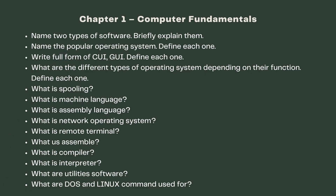Chapter One: Computer Fundamentals. Name two types of software and briefly explain them. Name the popular operating systems and define each one. Write the full form of CUI and GUI and define each one. What are the different types of operating systems depending on their function? Define each one.